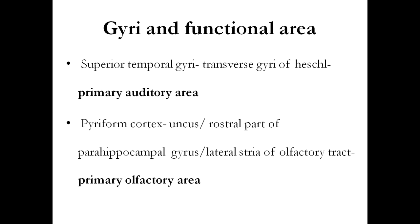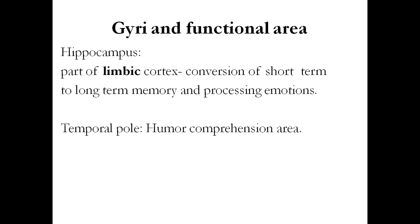the parahippocampal gyrus, and the lateral stria of the olfactory tract form the primary olfactory area. The hippocampus, which is part of the limbic cortex, converts short-term to long-term memory and allows the processing of emotions.